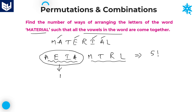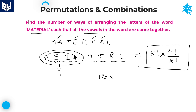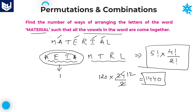Within that single entity we have four letters, which can be arranged in 4! ways. However, the letter A is repeated twice, so we divide by 2!. The final result is 5! × (4! / 2!). Since 5! = 120, 4! = 24, and 2! = 2, this gives 120 × 12 = 1440. We can arrange the word MATERIAL in 1440 ways such that all vowels come together.